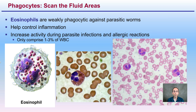Eosinophils are weakly phagocytic against parasitic worms. They help control inflammation and show increased activity during parasite infection and allergic reactions. These only comprise about 1% to 3% of white blood cells, so they're not heavily utilized by the immune system, but still offer another component of protection.